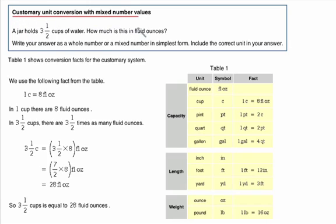This topic is called customary unit conversion with mixed number values. That's kind of a fancy name for just figuring out what's what. We're going to convert some stuff. And this table is really important. Putting this table in your notebook is going to be really helpful because you'll be using it a lot for more than just this topic. Let's look at how it works.